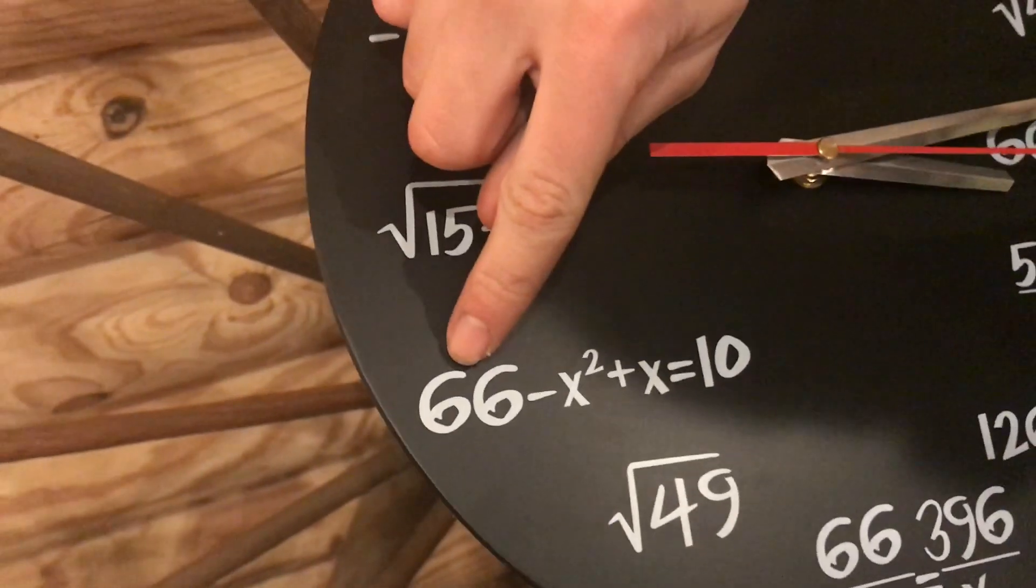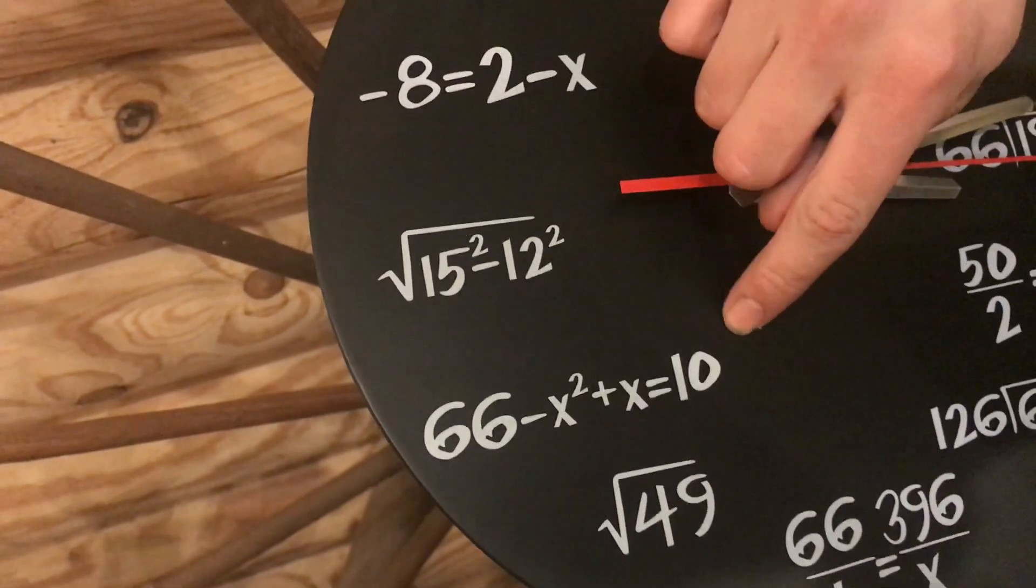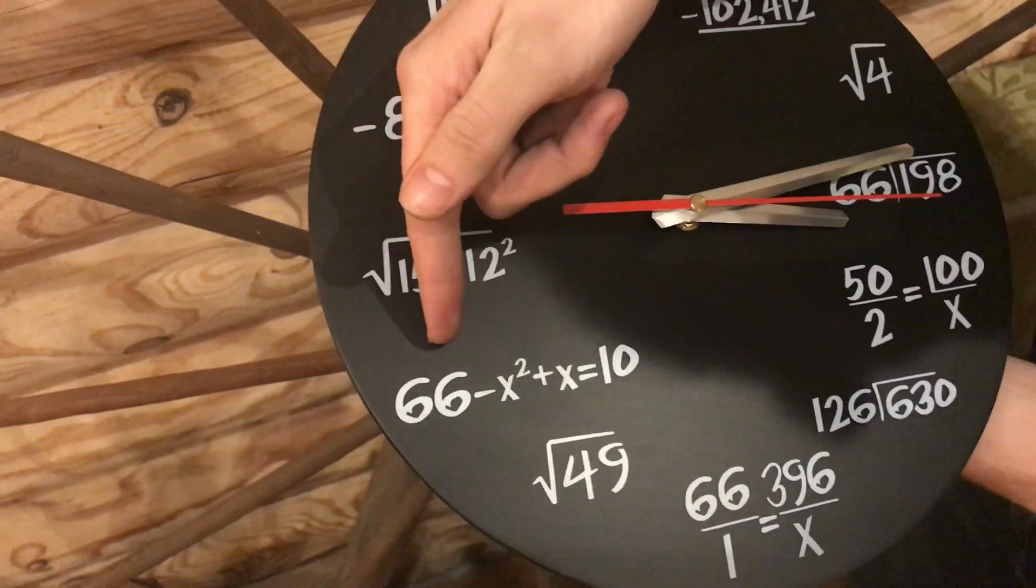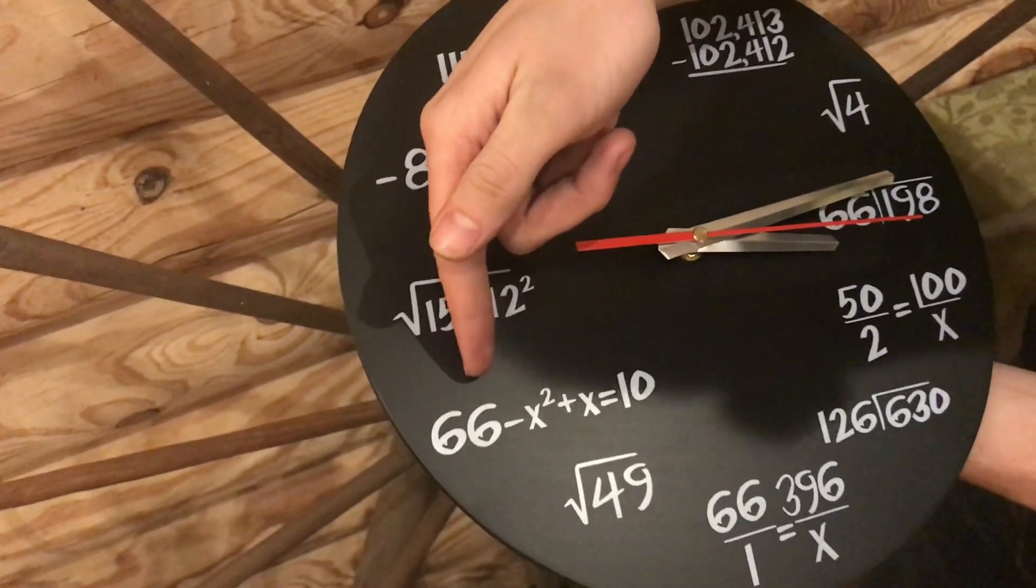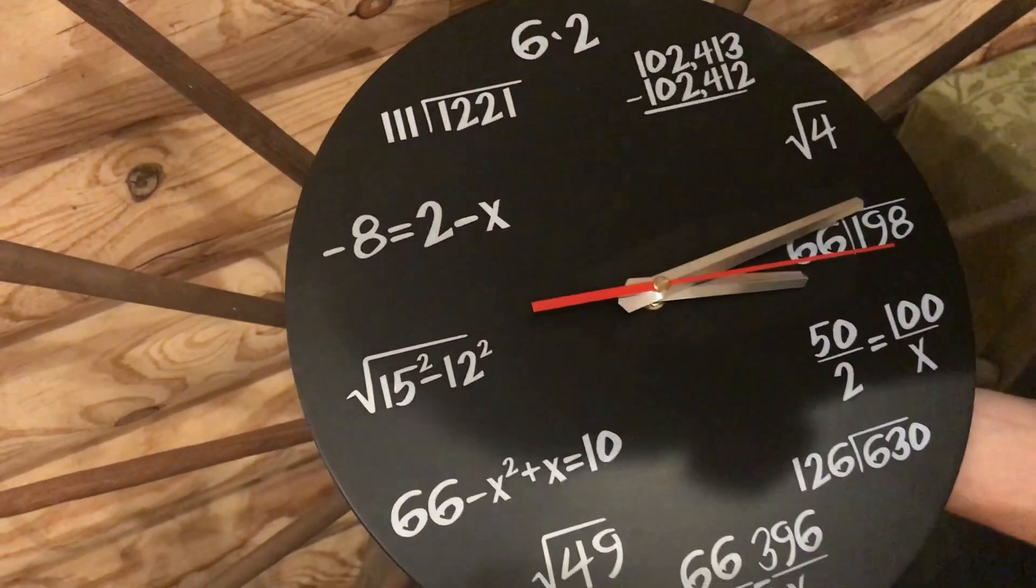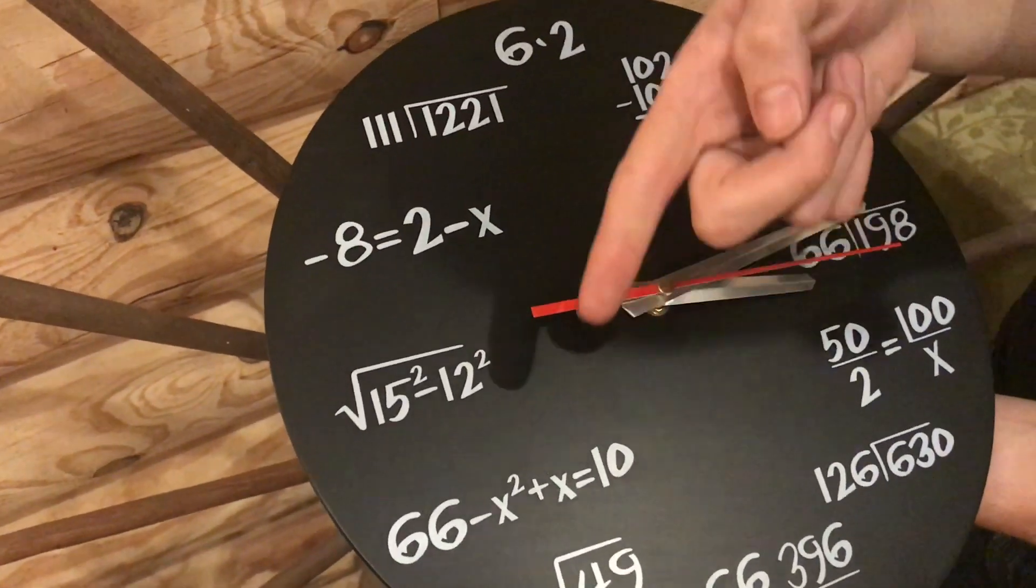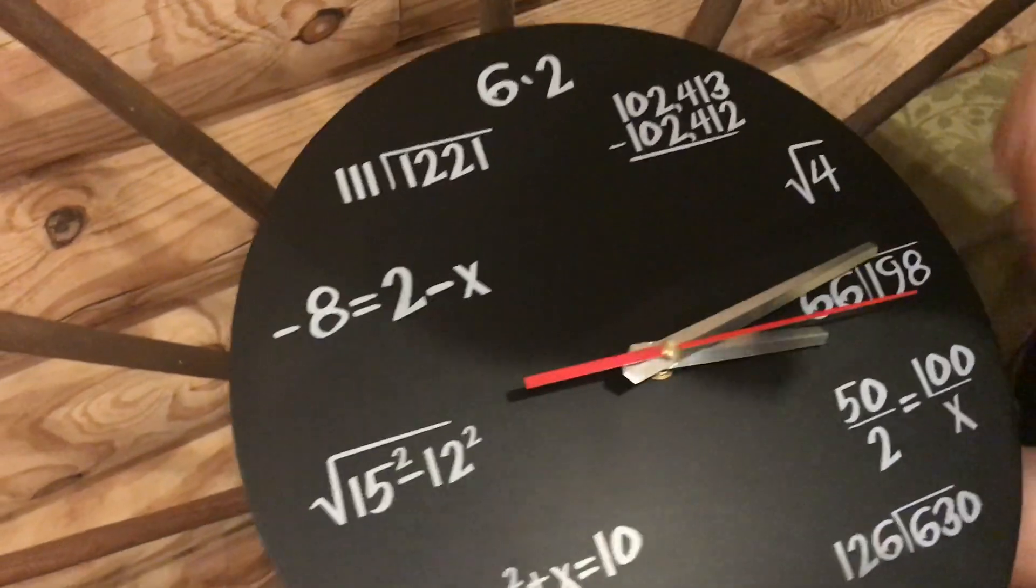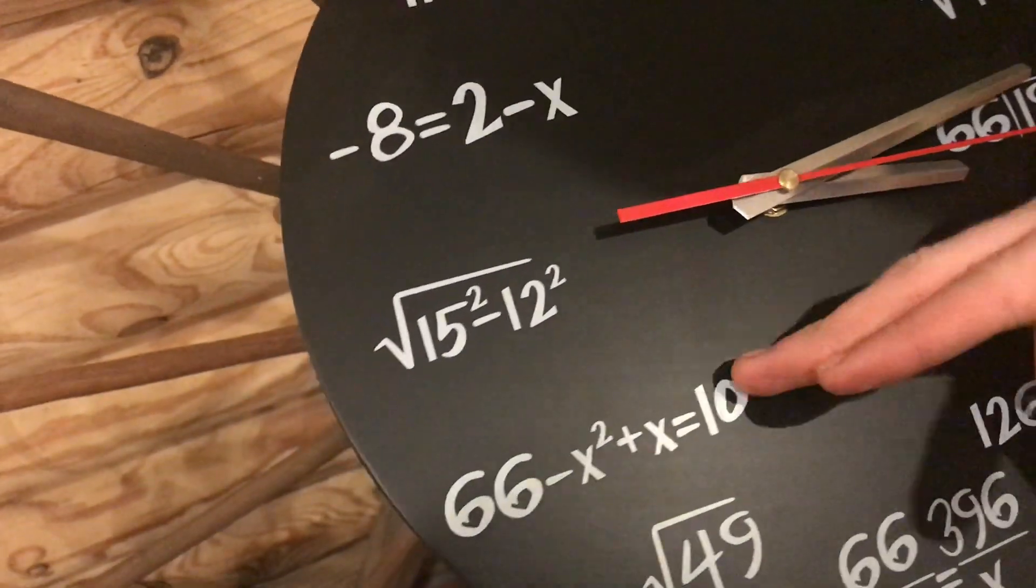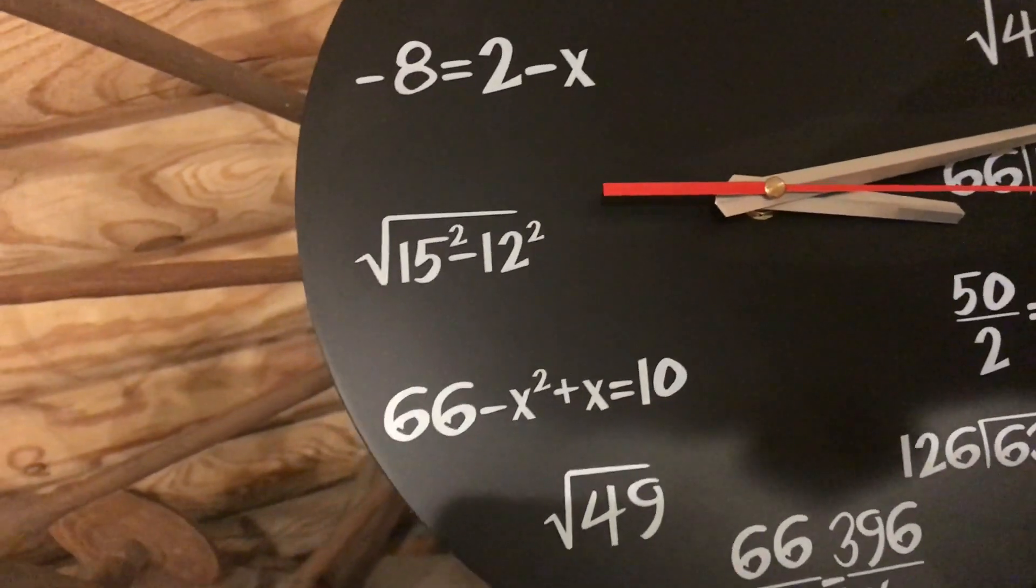Then I'd have negative 66 plus x squared minus x equals negative 10. You could add 10 to both sides, and then you would end up with negative 56 plus x squared minus x equals 0. And then you would be able to graph that, and the solution to that would be 8. Or you could actually factor it, and factoring it would be able to give you the same answer.